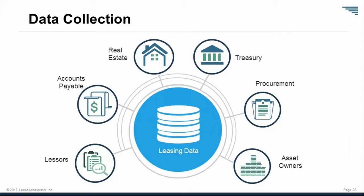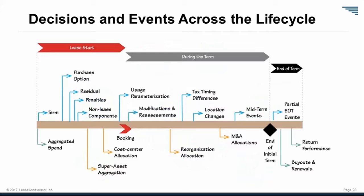Most people are very focused on the lease start — meaning getting data ready for the initial date of application. For December 31st filers, that was January 1st, 2017, requiring three years of income statement comparables and two years for the balance sheet. But once you have it in the system, you really need to make it easy and lightweight to capture judgments, decisions, and events across the lease lifecycle during the term — not just for accounting compliance, but to manage the business effectively and generate savings through negotiating buyouts, improving return performance, and aggregating spend to drive down lease capital costs.